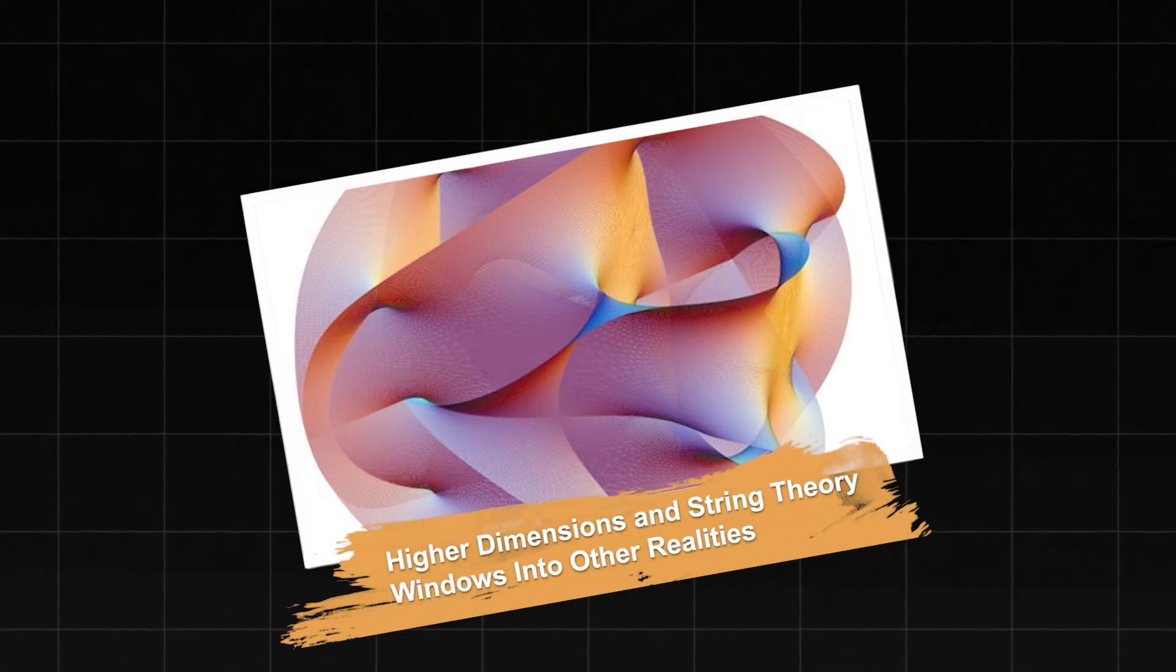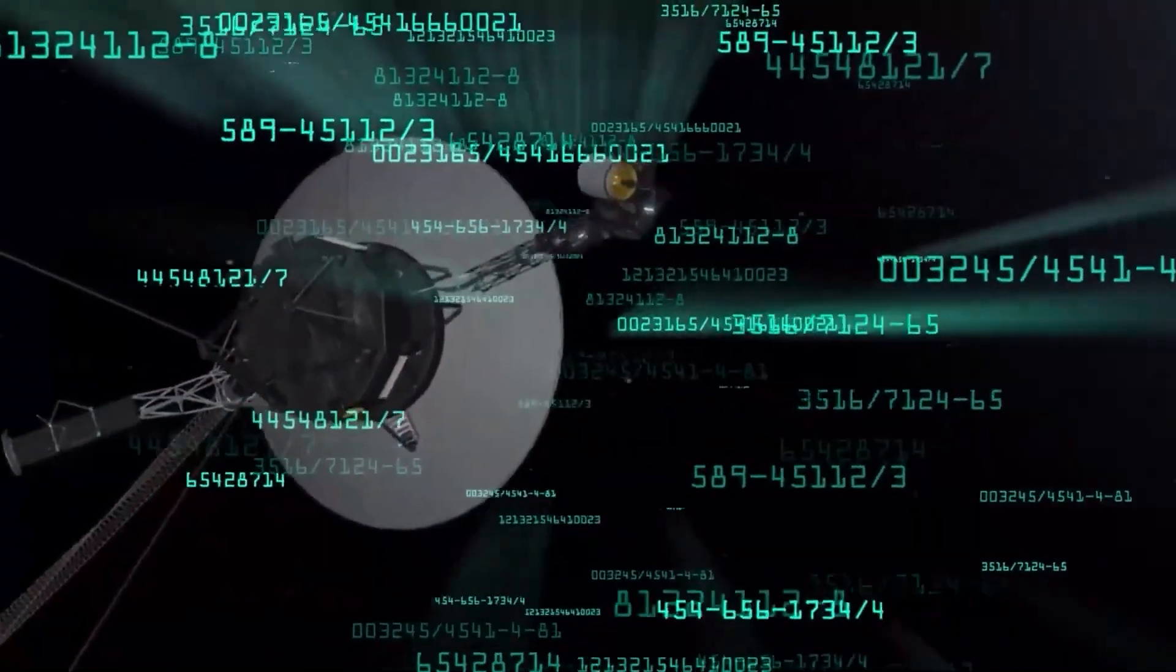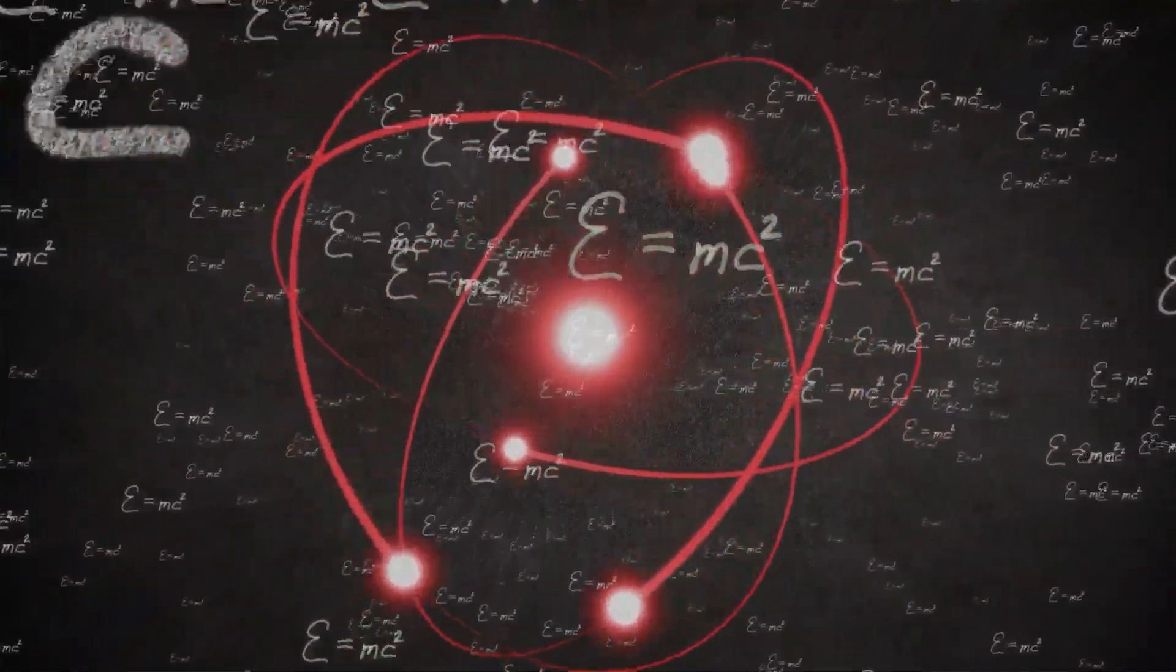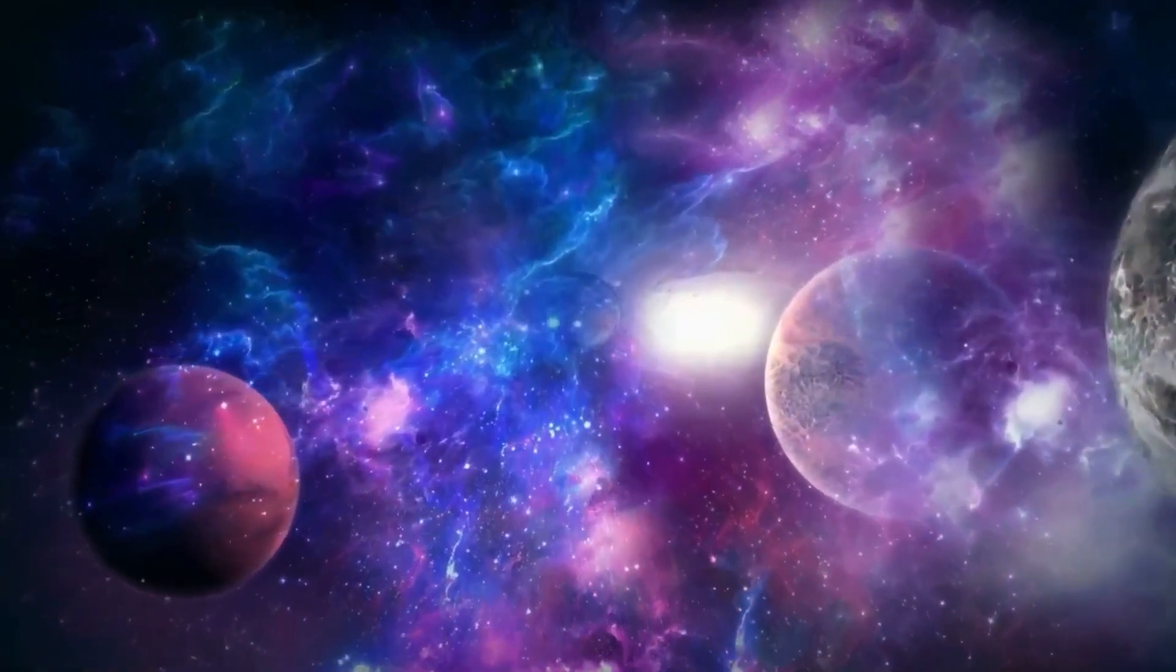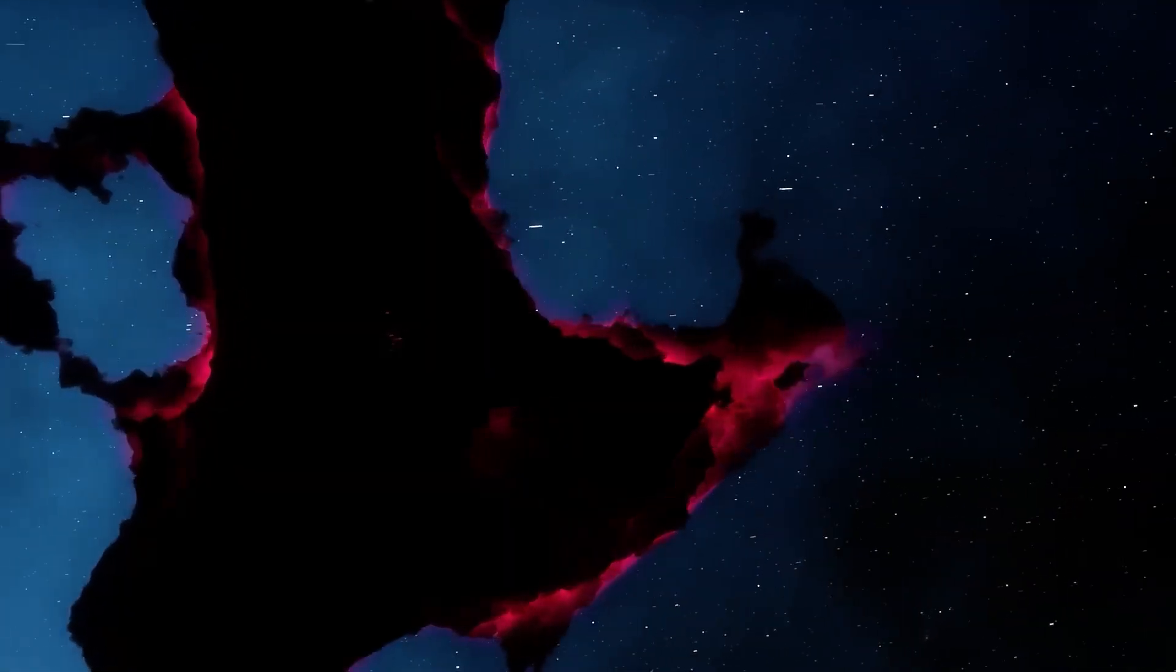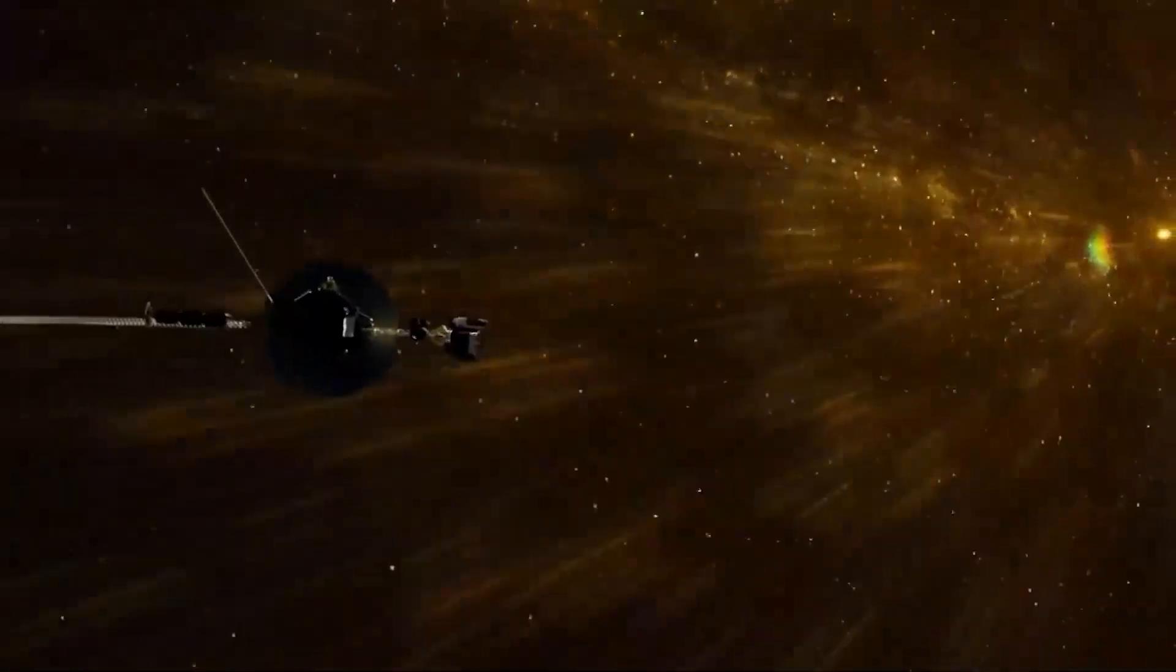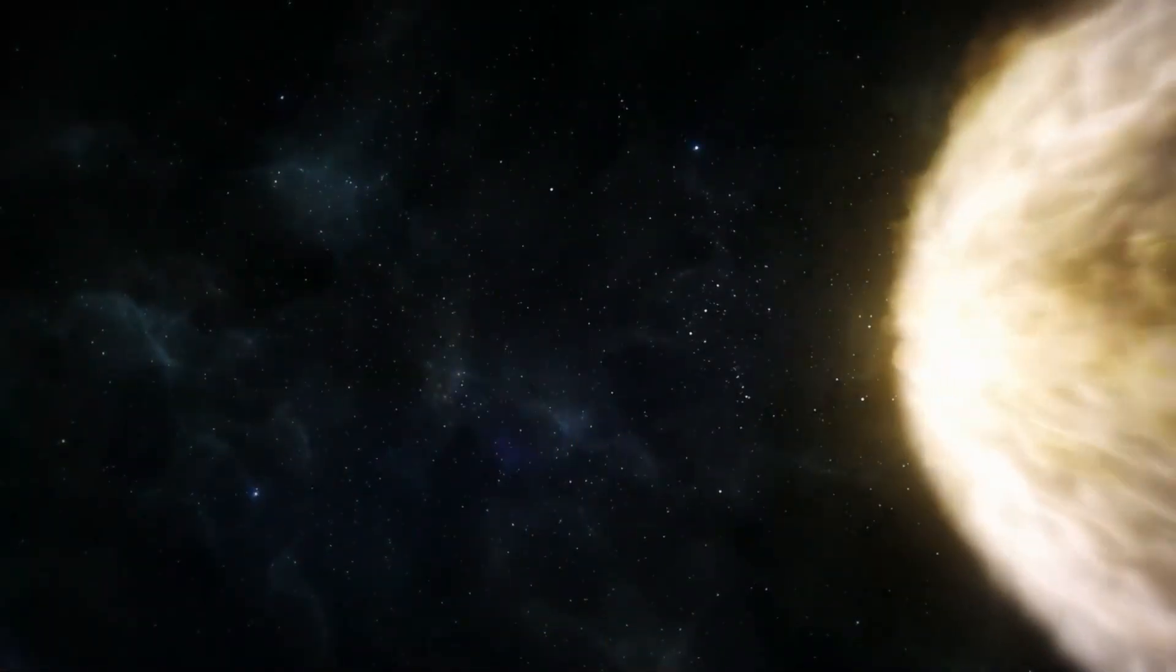Higher dimensions and string theory: windows into other realities. The geometric patterns detected in Voyager's data have sparked intense interest among string theorists. String theory, and its more comprehensive successor M-theory, propose that our universe consists of up to 11 dimensions, most of which are compactified or curled up at scales too small to observe. The lattice-like anomaly might represent a projection or shadow of structures existing in these higher dimensions, much as a three-dimensional object casts a two-dimensional shadow.